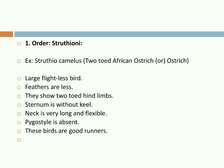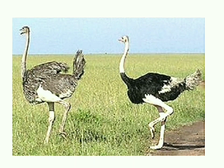Struthioniformes: large flightless birds with fewer feathers, showing two-toed hind limbs. Sternum is without a keel. Neck is long and flexible. Pygostyle is absent. They are abundant in Arabia and North Africa. About eight feet in height. They are polygamous and lay about three eggs each time; eggs are very large in size. They are good runners. Example: Struthio camelus — the Ostrich.